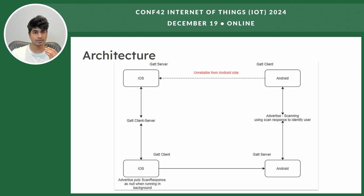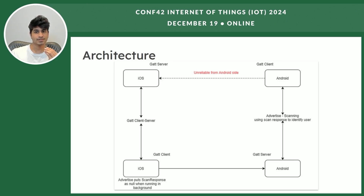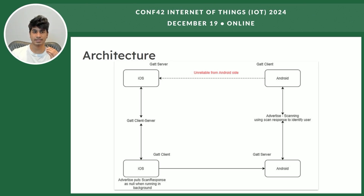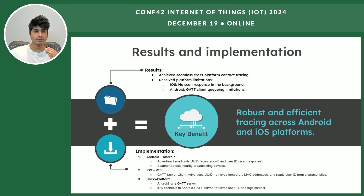With these two individual architectures running, we have Android devices which can identify all other Android devices, and iOS devices which can identify all other iOS devices. When it comes to iOS-to-Android or Android-to-iOS detection, the tracing is done by the iOS device. Each Android device will also run a GATT server, which the iOS device will connect to — similar to how it does with iOS GATT servers — and read the scan response from the Android device. For example, if X is an iOS device and A is an Android device, the iOS device is responsible for both edges in the case of Android-to-iOS detection. This removes the limitation that iOS devices cannot send a separate scan response while running in the background, as well as the limitation that Android GATT clients can't queue.